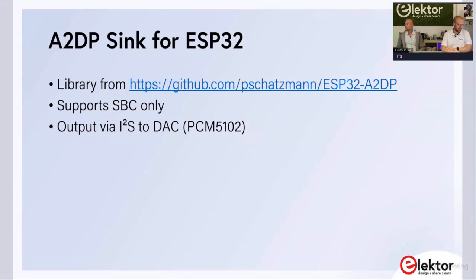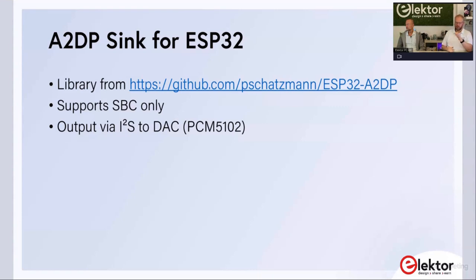Can BLE audio be routed to I²S? Yes. There's also sample code for the other direction — using the ESP32 as an audio source (transmitter), not just a sink. However, I²S input isn't currently implemented for the transmitter side; it reads from internal RAM or an SD card. With a bit of work, it could function as an audio bridge, though every processing step adds latency — aptX low latency is around 42–50 milliseconds.